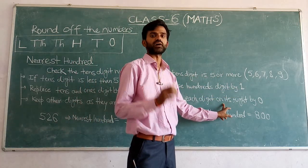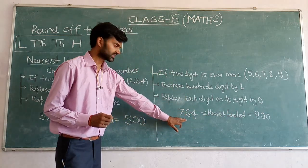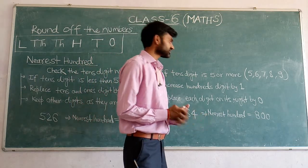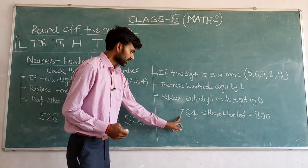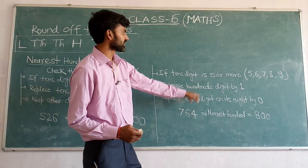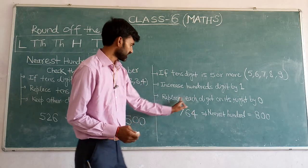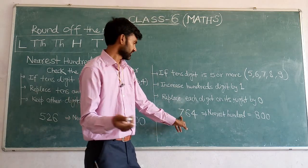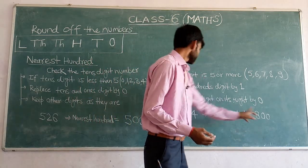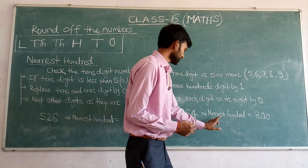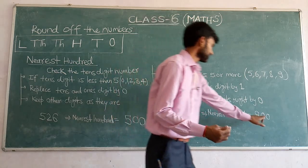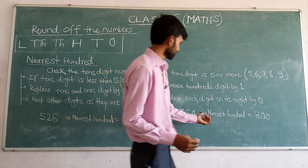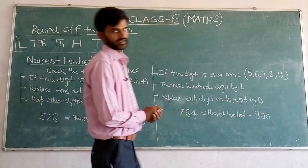For example, the number 764. We have to round up to the nearest 100. Look at the tens digit — it is 6, which is greater than 5. So increase the hundreds digit by 1. The hundreds digit is 7, so the next is 8, and replace all the digits on its right by 0. So the nearest 100 of 764 is 800.